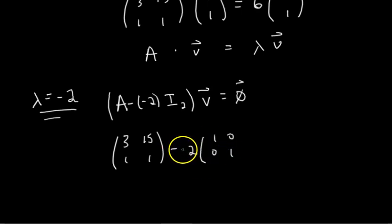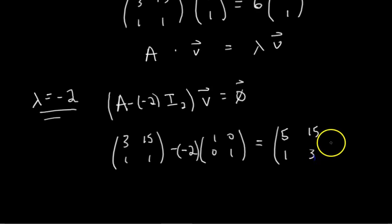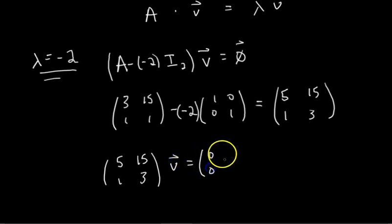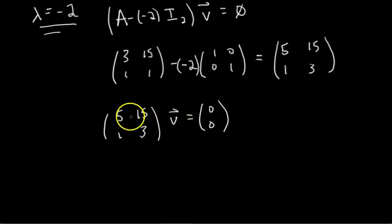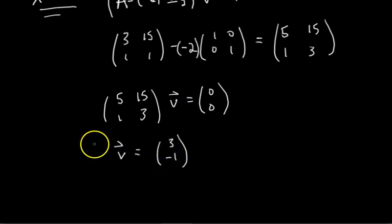Be careful — this should be minus negative 2, because our lambda is negative 2. That means we're actually adding 2 to the main diagonal, giving us the matrix [5, 15; 1, 3]. Now we just need to find the solution V to [5, 15; 1, 3]·V = 0. By inspection, the second column is 3 times the first column, so if V = [3, -1], this is satisfied. So V = [3, -1].